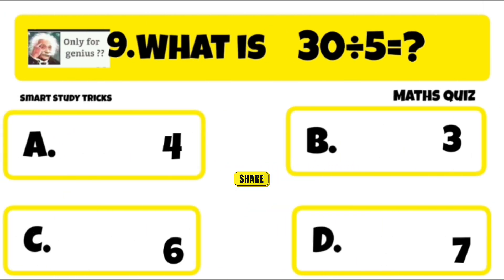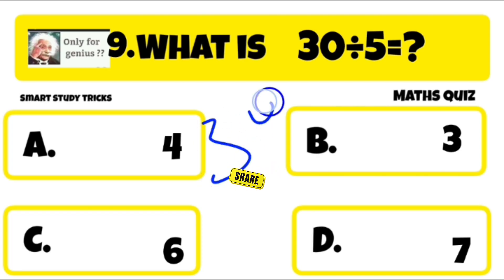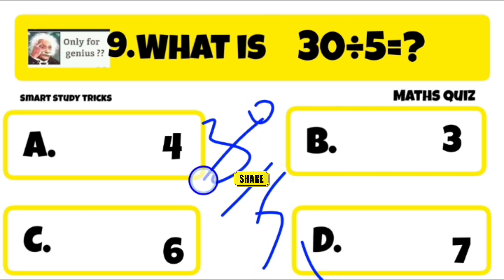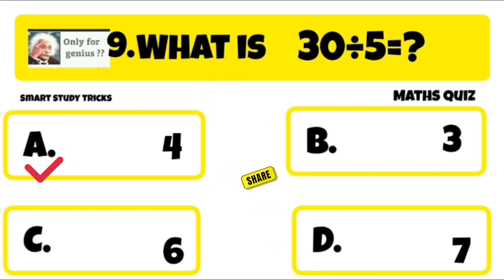Quiz number 9 is: what is 30 divided by 5? 30 divided by 5 is equal to 6. Right answer is 6.